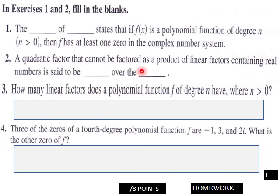On page one, we have fill in the blanks and how many linear factors does a polynomial function f of degree n have, where n is greater than zero. Three of the zeros. I'll let you do this. This is your first page of 2.5 Part 1 homework. Eight points here.